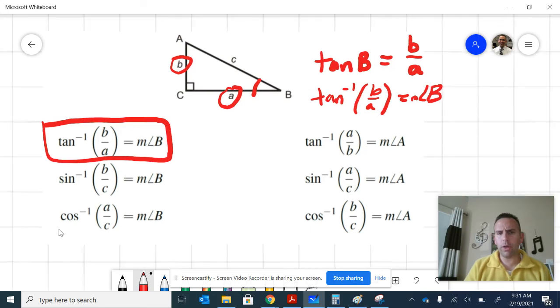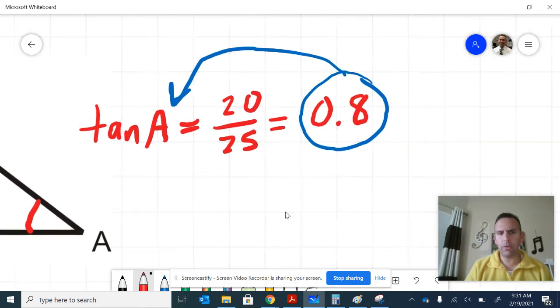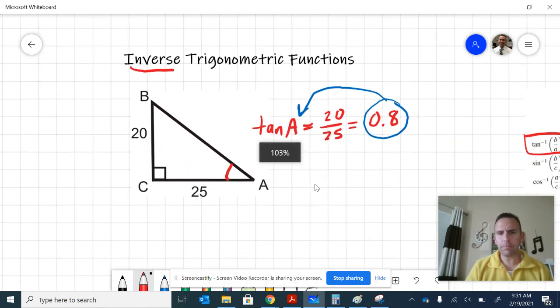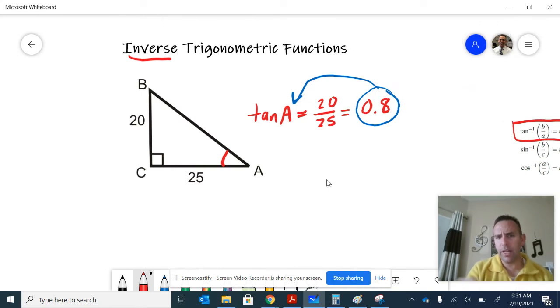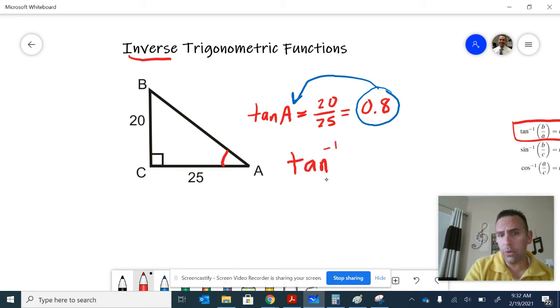Or you can say the measure of angle B, the size of angle B. So it takes us backwards. Let's look a little bit more at our specific example. We can go to our calculator and ask the calculator, if I know the tangent ratio is 0.8, what would be the angle that deals with 0.8?